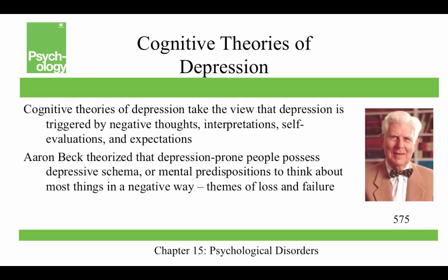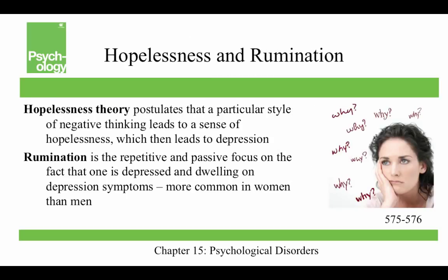Cognitive theories of depression take the view that it is triggered by negative thoughts, interpretations, self-evaluations, and expectations. Aaron Beck theorized that depression-prone people possess depressive schemas — a mental predisposition to think about most things in a negative way, with themes of loss and failure — and longitudinal studies have supported his theory. Hopelessness theory postulates that a particular style of negative thinking leads to a sense of hopelessness, which then leads to depression. Rumination — a repetitive and passive focus on the fact that one is depressed and dwelling on depression symptoms — is much more common in women than men.